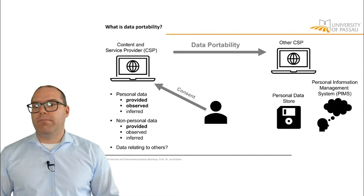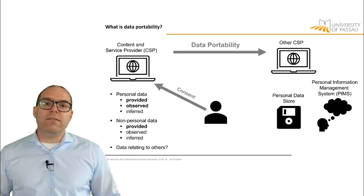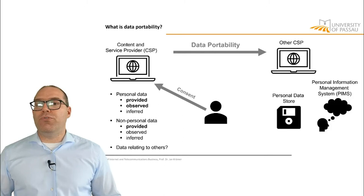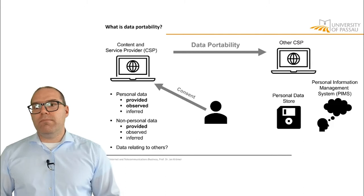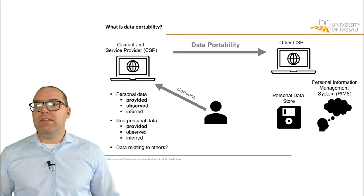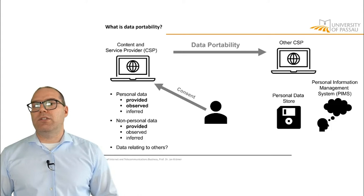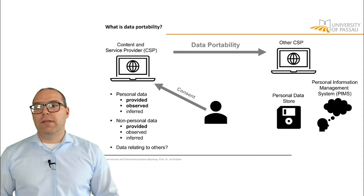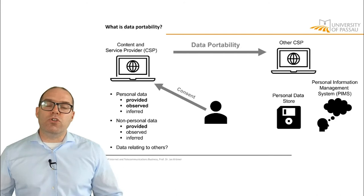Also in the context of non-personal data, data can be provided — for example, documents — or data can be observed or inferred. It is currently understood that with data portability you can only port data that you have provided or that you have implicitly given through clicks or likes — so data that is observed — but not data that is inferred about you. Also in the context of non-personal data, this is usually limited to data that has been provided.